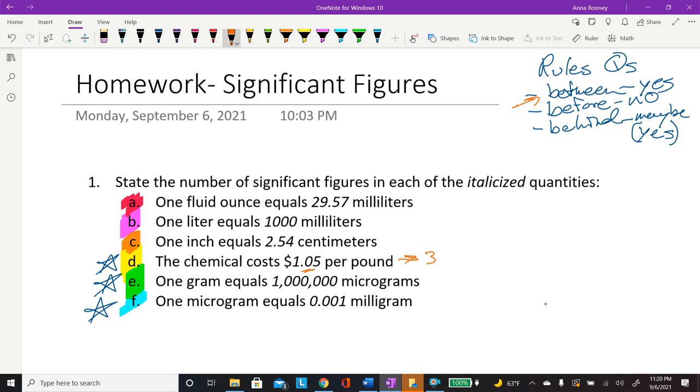So here, this is where the maybe comes in. So if you measure one gram, and your scale only shows grams, then you have only accurately measured, because significant figures really have to do with measurements. So you've only really accurately measured up to one gram.